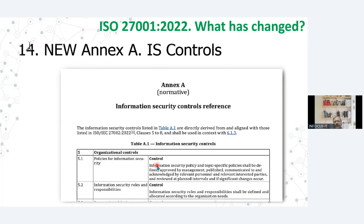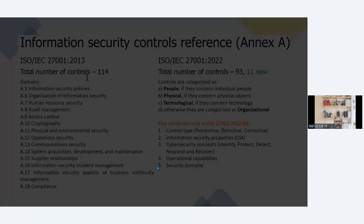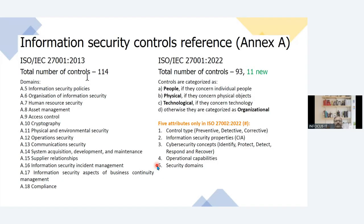ISO 27001 also contains Annex A controls which contains the complete normative control reference summary. There are also some changes being made there. Earlier in the previous version 27001:2013 there were 14 domains listed and 114 controls. Now the shuffling has been made and the domains are called controls now, with total four controls. In the previous version the Annex A domains were starting from A5 — information security policies — running from A5 to A18, ending in compliance. These were the 14 domains.